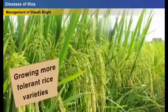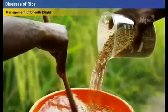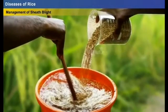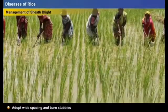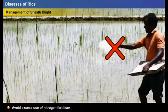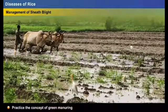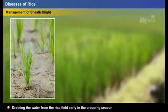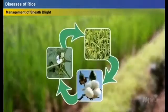The infection spreads easily to neighboring tillers when they come in contact with infected leaves. Sheath blight can be controlled by growing tolerant rice varieties; avoiding infected seeds; treating seeds with fungicide before sowing; adopting cultural practices like wide-space sowing, weed control, and burning of stubbles; avoiding excess nitrogen fertilizers; practicing green manuring during land preparation; draining water early in the cropping season during sheath formation; and adopting crop rotation with dicot crops.